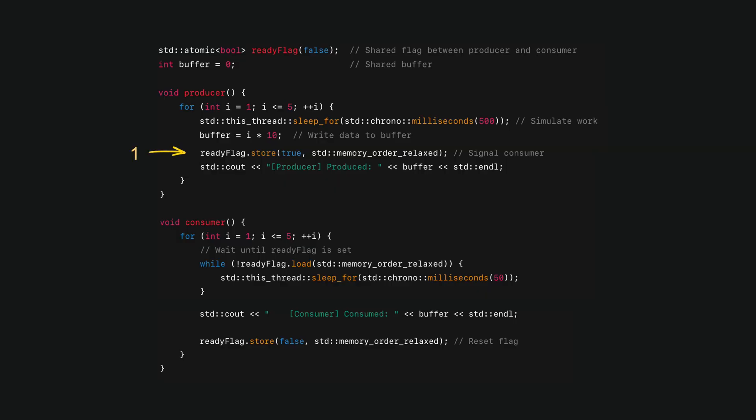Without a memory barrier, it's possible for the CPU to reorder the writes to set the flag to true even before the data is stored in that area. The consumer sees the flag, reads uninitialized garbage, and your program crashes.